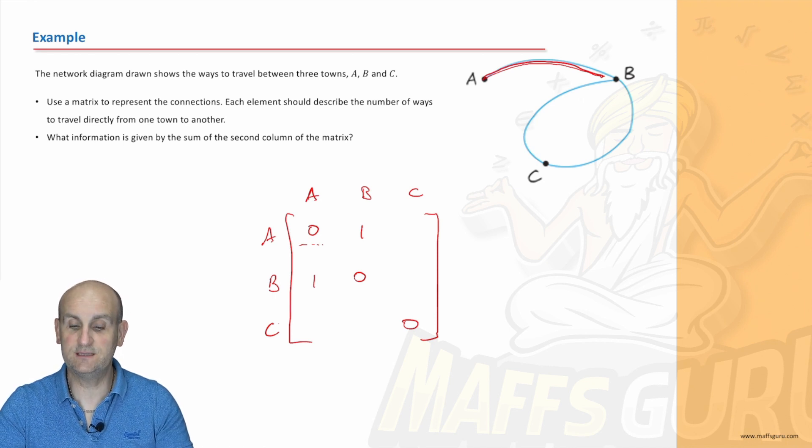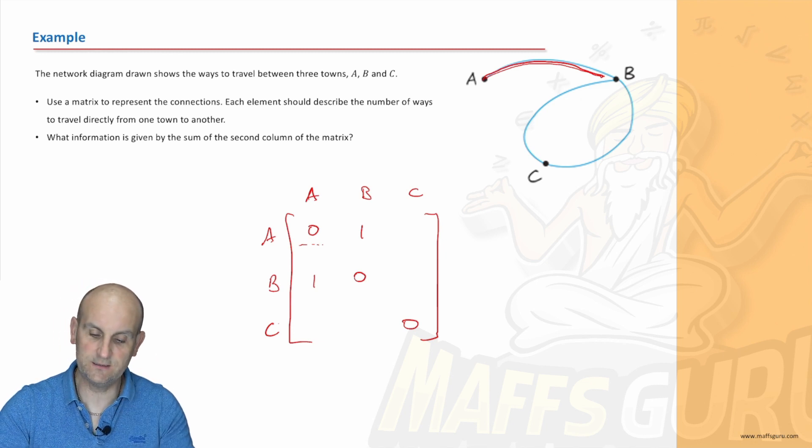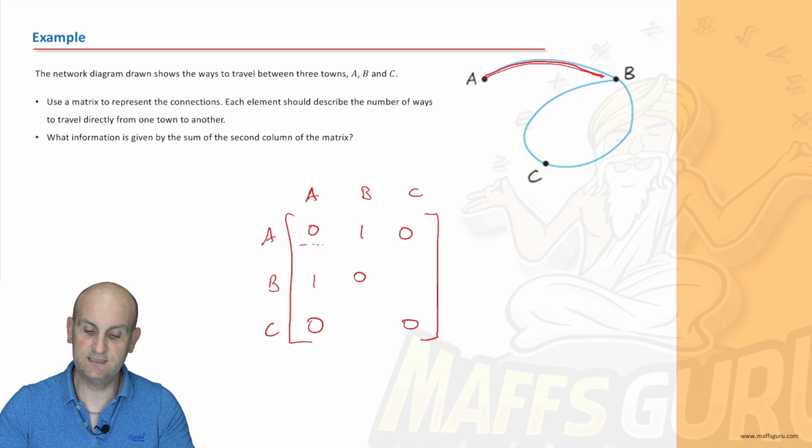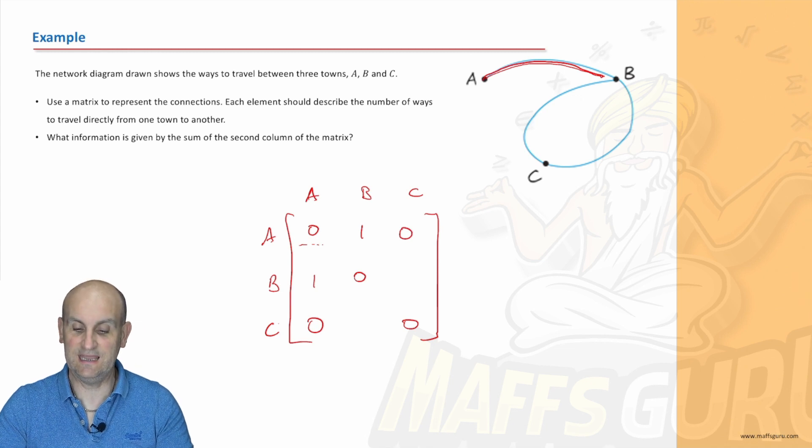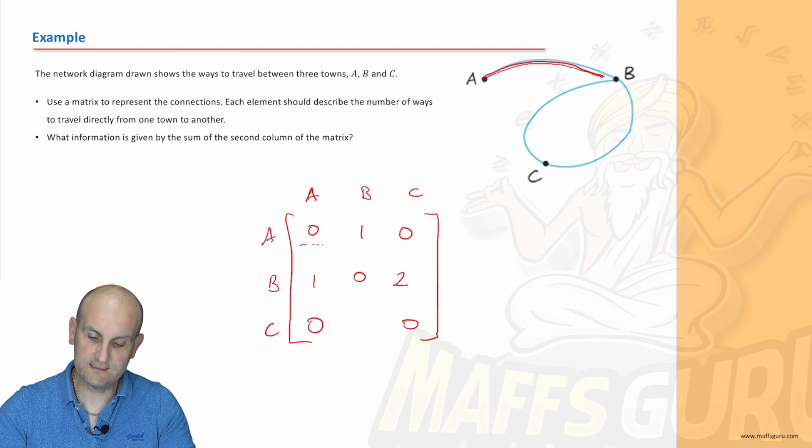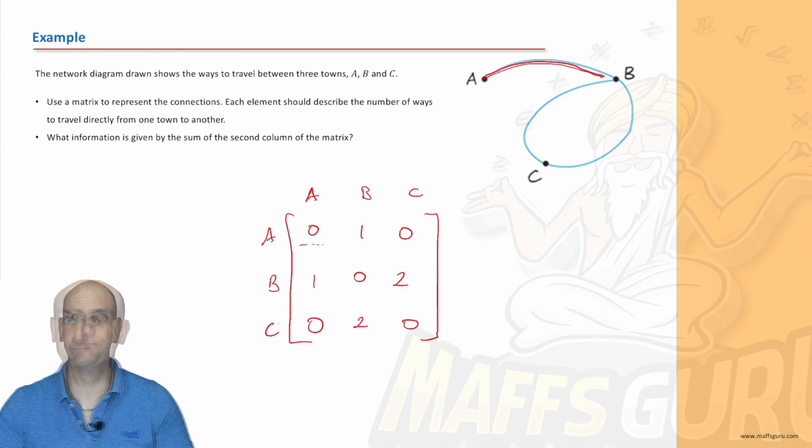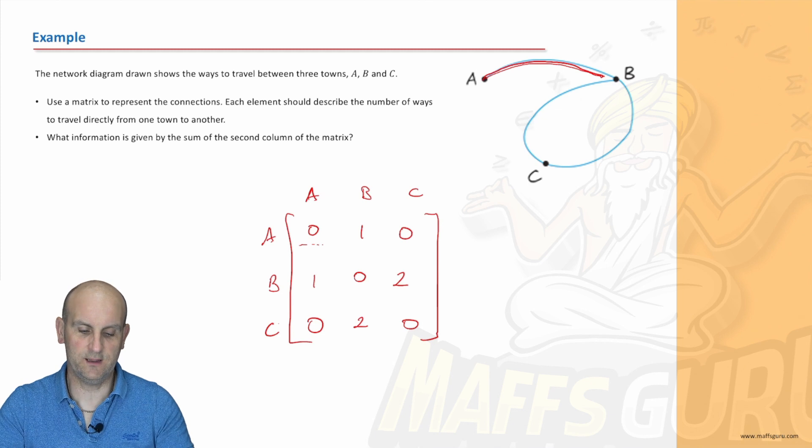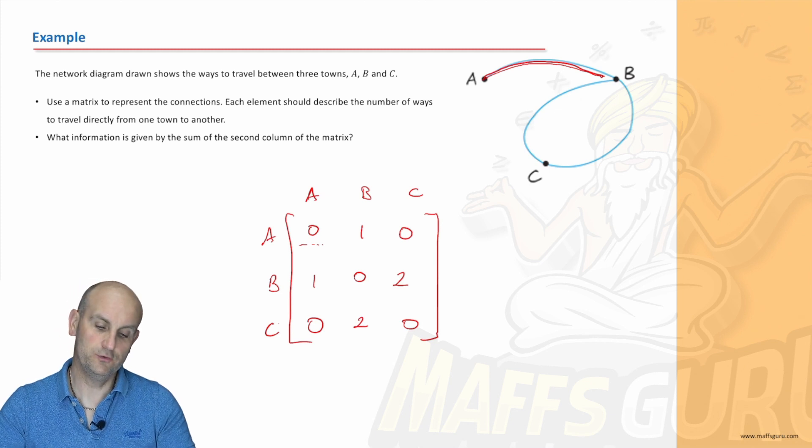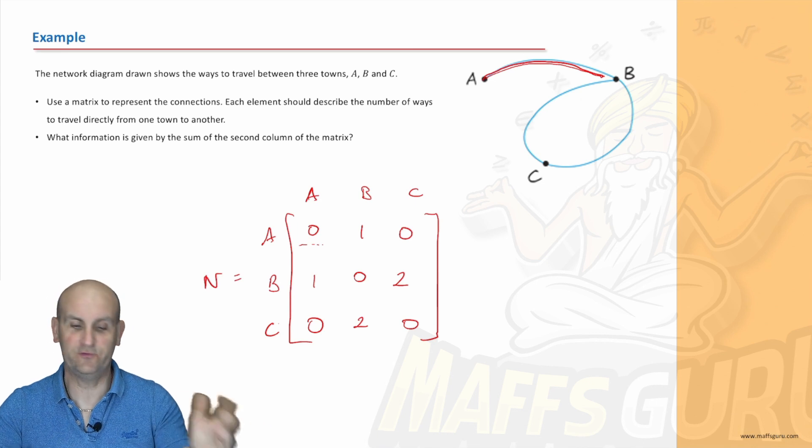From A to C how many ways are there to go directly from A to C? There are none and these need to be direct connections which means there's got to be zero from C to A. All right B to C can you see there are two ways. There are two ways to go from B to C and so there must be two ways to go from C to B. And there we go ladies and gentlemen believe it or not I've now represented a network diagram with a matrix and let's call it N equals for network diagram.